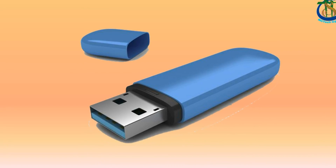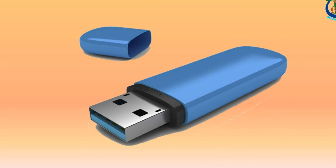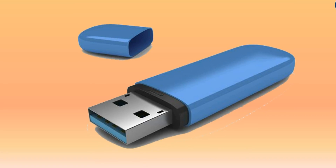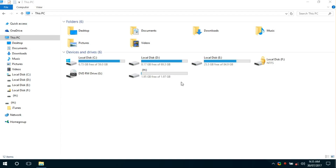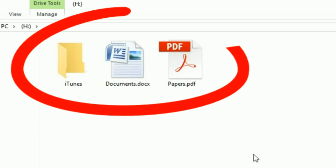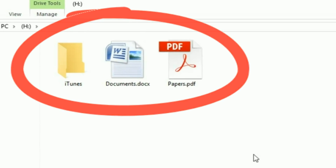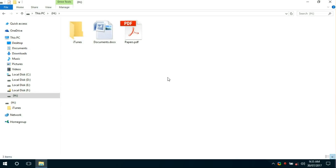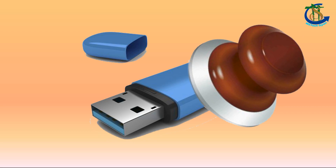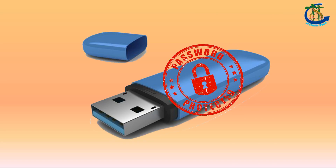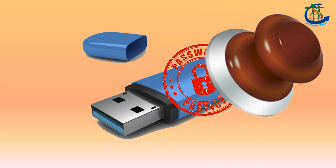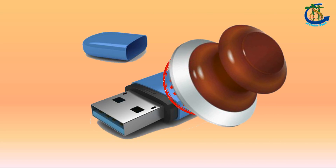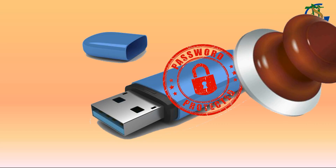USB drive is portable and is an in-cell storage media device. We often use USB drives to carry important data like office documents, personal files, etc. So we need a password-protected USB drive to stop any unauthorized access to our private data. Here are the steps to lock the USB drive.